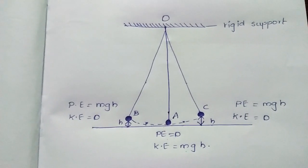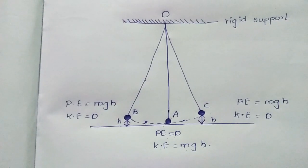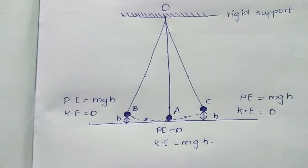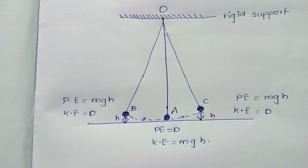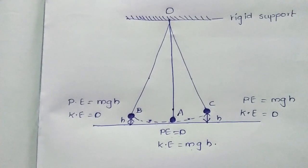When the bob is displaced to one side and then released, it will make oscillations. It swings from one side to the other, reaching equal distance and equal height. The point to be noted is equal distance and equal height.